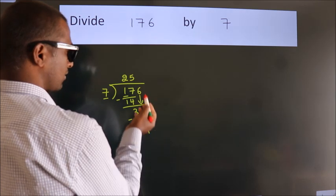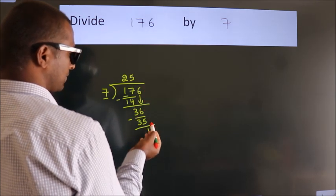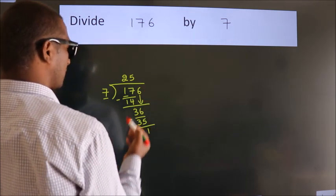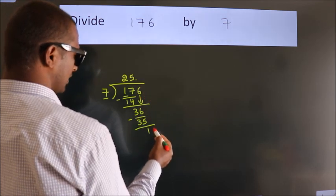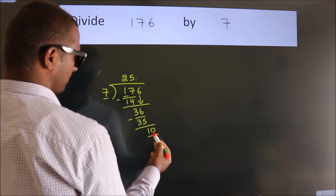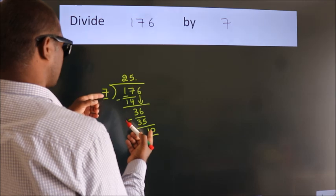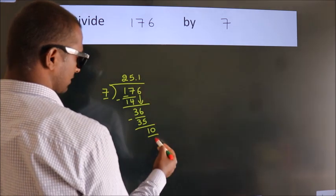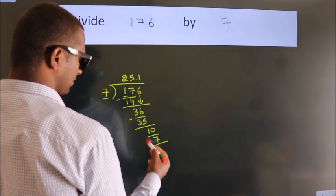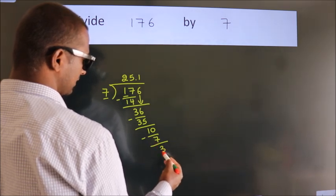After this, no more numbers to bring down. So what we do is, we put a dot and take 0. So 10. A number close to 10 in the 7 table is 7 ones, 7. Now, we subtract. We get 3.